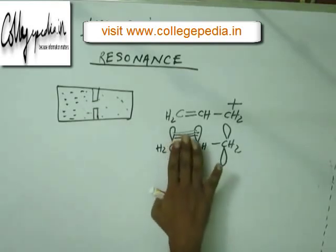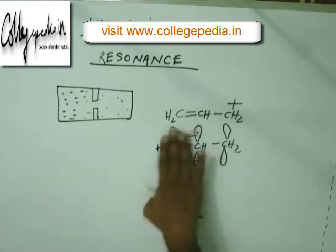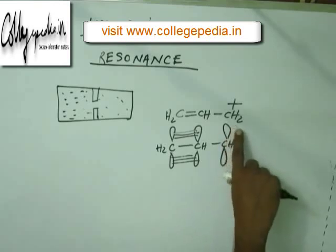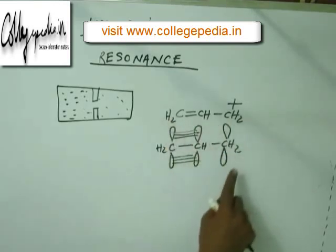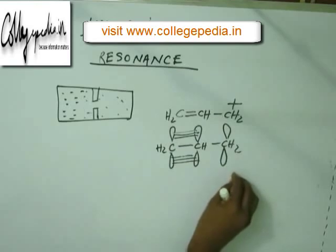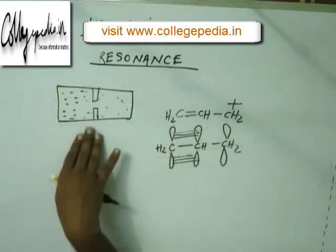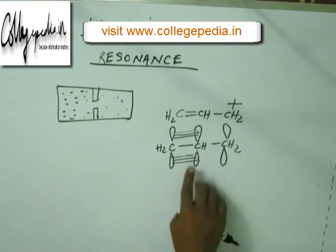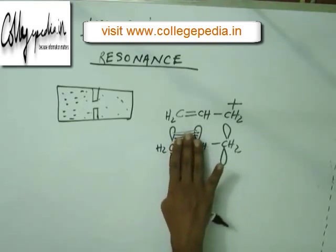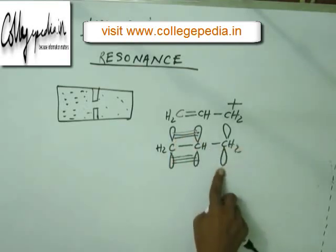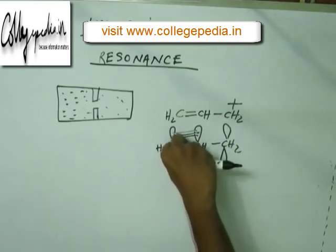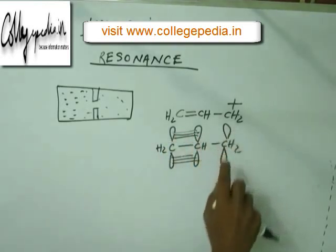Similarly, here we have a region of electronic high pressure — electrons making a pi bond — and this adjacent orbital is empty, meaning it is a region of electronic vacuum. I have drawn this structure, but this structure is unstable, analogous to the two-chamber figure. So this intermediate cannot remain as it is. It is unstable because the electrons from the high pressure region will automatically start to move towards the region of electronic low pressure.